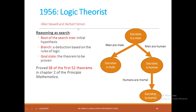Let us understand the Logic Theorist proposed by Newell and Simon. It is based on an initial hypothesis, a set of rules for deduction, and a goal state — a theorem to be proved. It proved 38 out of 52 theorems in chapter 2 of Principia Mathematica.